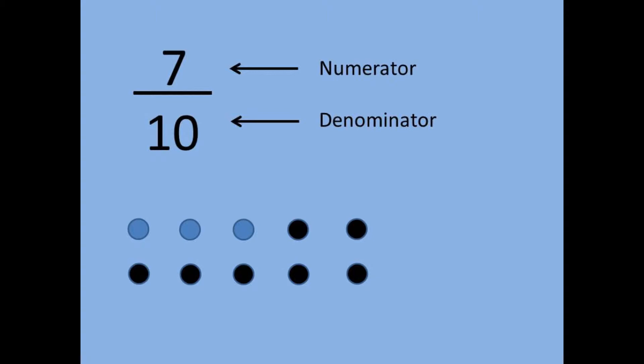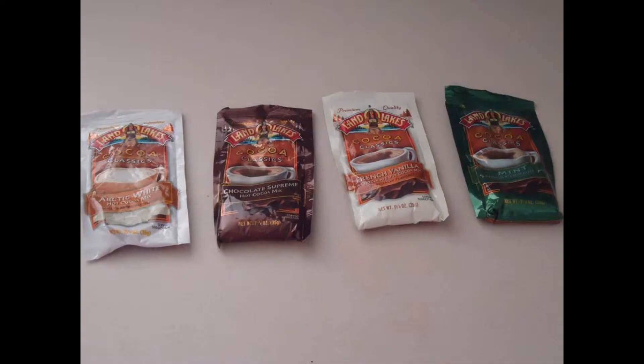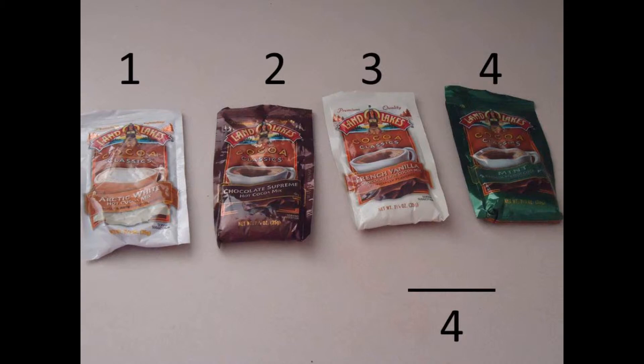Now let's go to the kitchen and help Ms. Rose plan a simple meal. Ms. Rose is really thirsty and she would like hot chocolate, so let's find the fraction of hot chocolate that is in green packaging. First, let's find the denominator by counting the total number of hot chocolate packets she has. What is the denominator going to be? 4 is correct. Remember, the denominator goes on the bottom of the fraction.